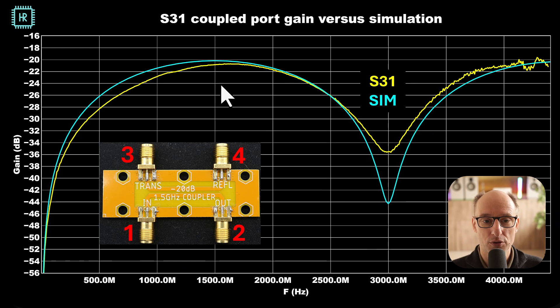Now let's have a look at the coupling. So this is the transfer from port 1 to port 3. And it's amazing how close it is to the simulation. So the light blue line is the simulation again. S31 is the coupling factor. So that's the transfer from 1 to 3. And you see that at 1.5 GHz we're within a dB which is very very good.